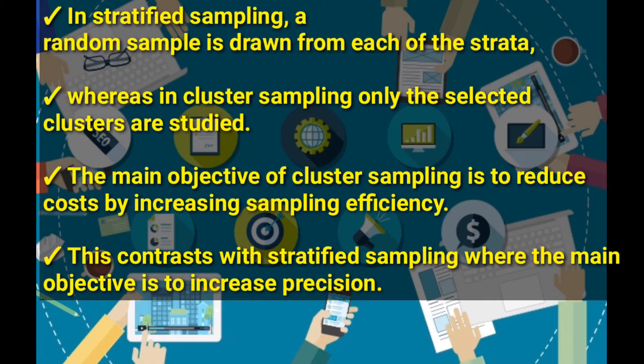Another difference is that the main objective of cluster sampling is to reduce costs by increasing sampling efficiency, because you only choose a specific cluster to study. The main objective of stratified sampling, on the other hand, is to increase precision.